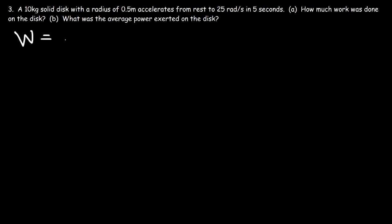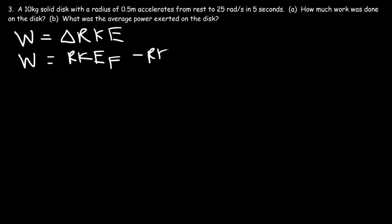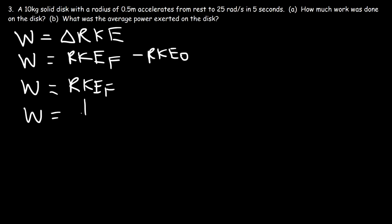There's more than one way to calculate the work done. This time we're going to use rotational kinetic energy. The work done equals the change in rotational kinetic energy — final minus initial. Since the disk accelerates from rest, the initial rotational kinetic energy is zero, so work equals the final rotational kinetic energy, which is one-half times moment of inertia times omega-final squared.